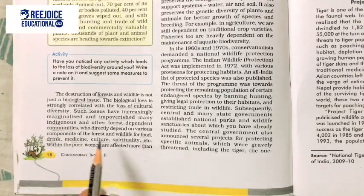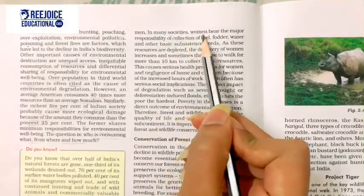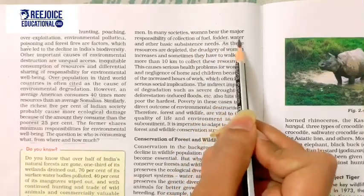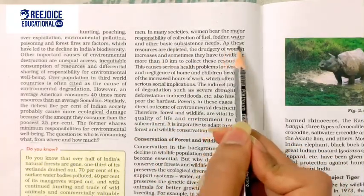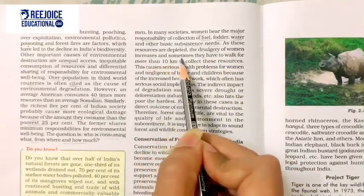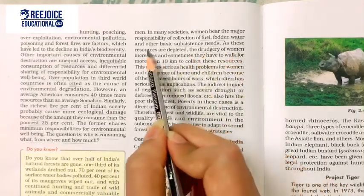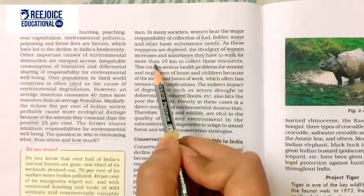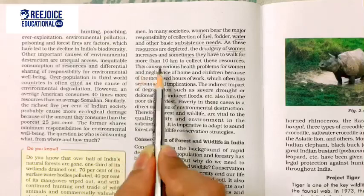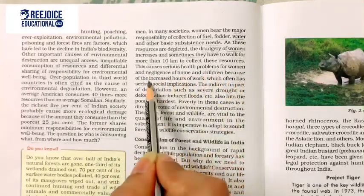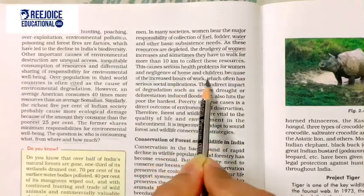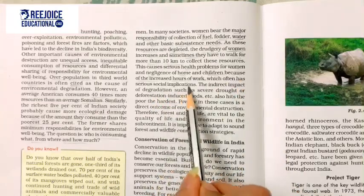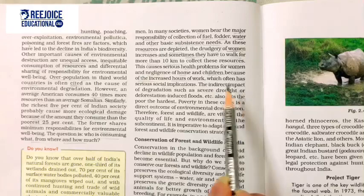Within the poor, women are affected more than men. In many societies, women bear the major responsibility of collecting fuel, fodder, water, and other basic necessities. As these resources are depleted, the drudgery of women increases, and sometimes they have to walk more than 10 km to collect these resources. This causes serious health problems for women and negligence of home and children due to increased hours of work.